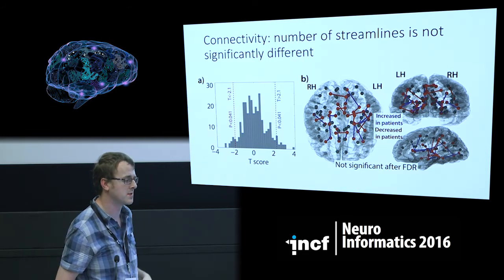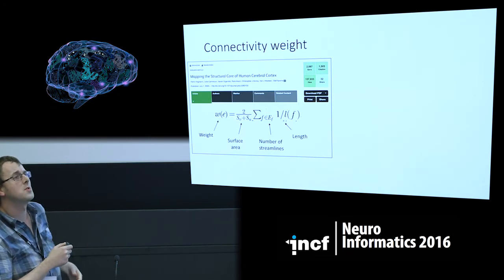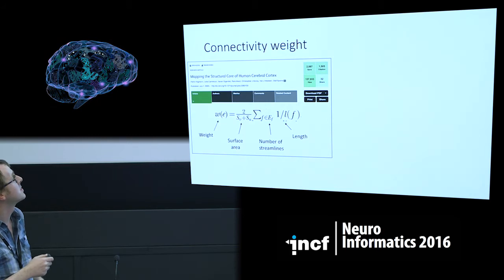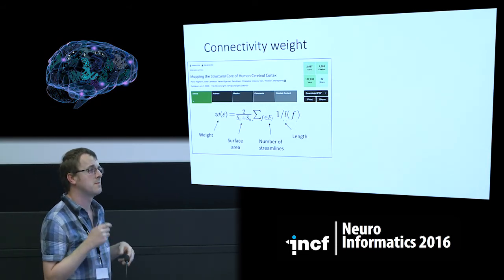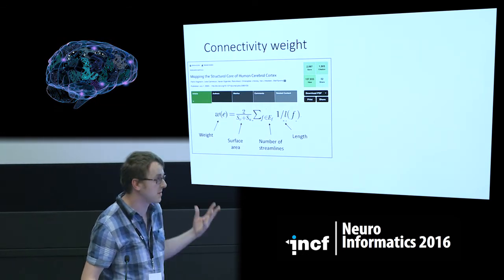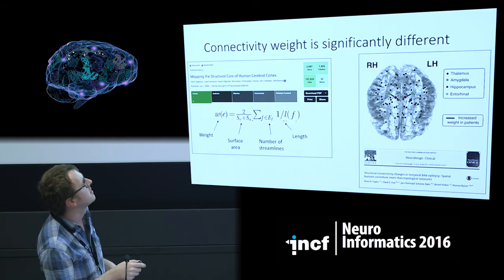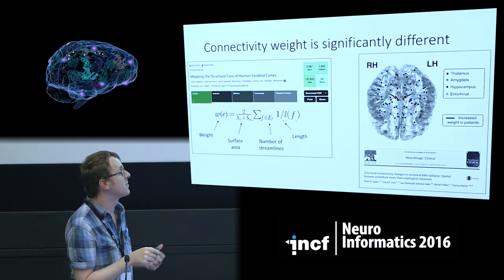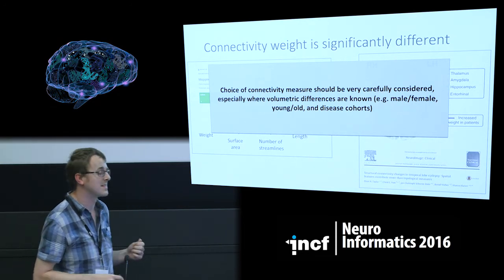A different and widely used measure is the connectivity weight from Hagmann's study — one of the key studies that kick-started the structural connectomics revolution. It takes a connectivity weight as a function of the density of streamlines to the surface area, normalised by the length of the streamlines interconnecting two areas. When I applied this to patients, it does result in significant differences even after FDR correction, with a subset of connections showing significant differences. However, I would argue these differences are actually driven by alterations in the nodes of the network, rather than necessarily the connections between them.